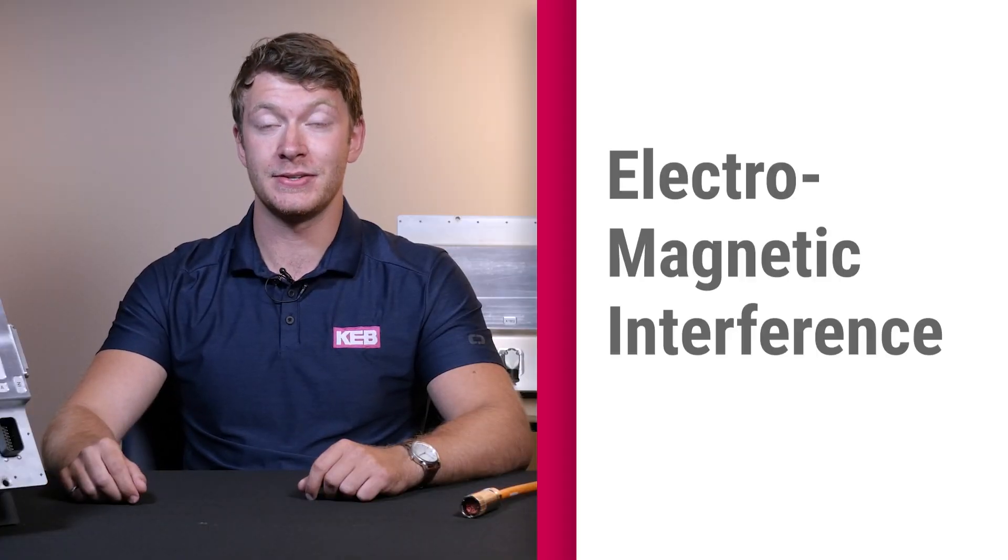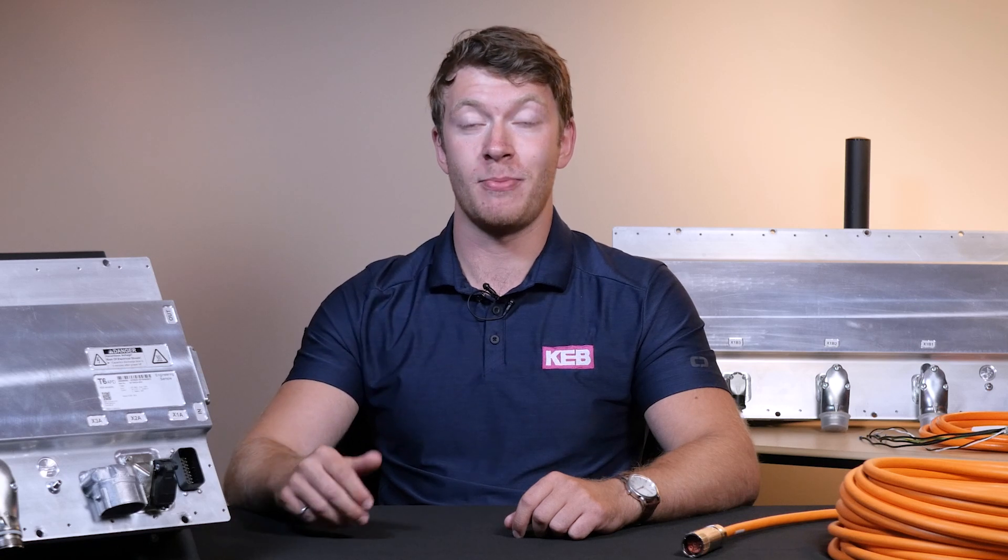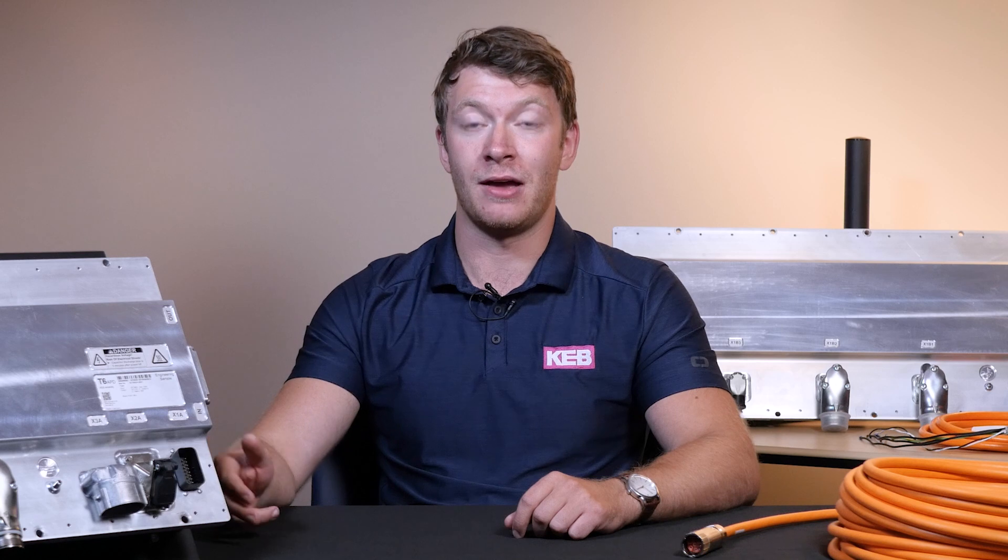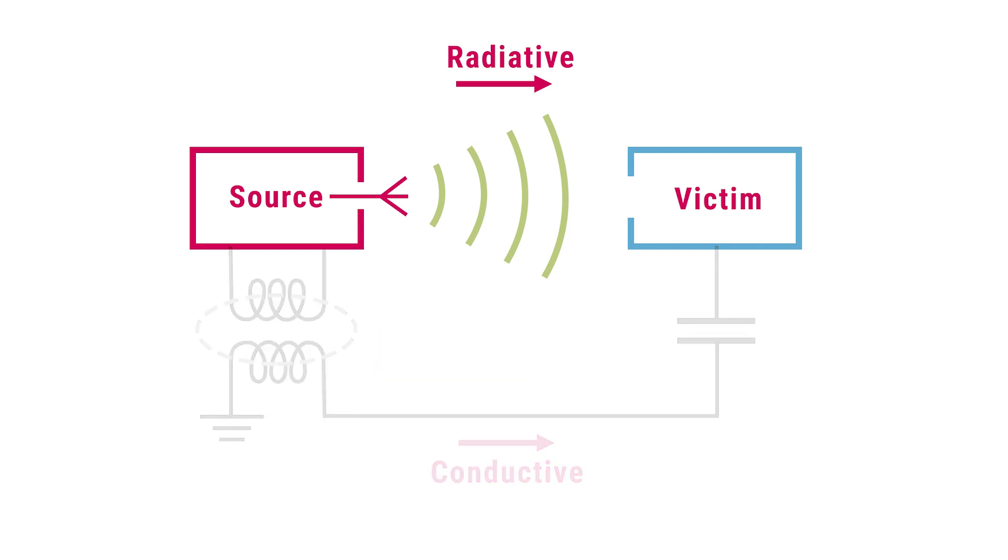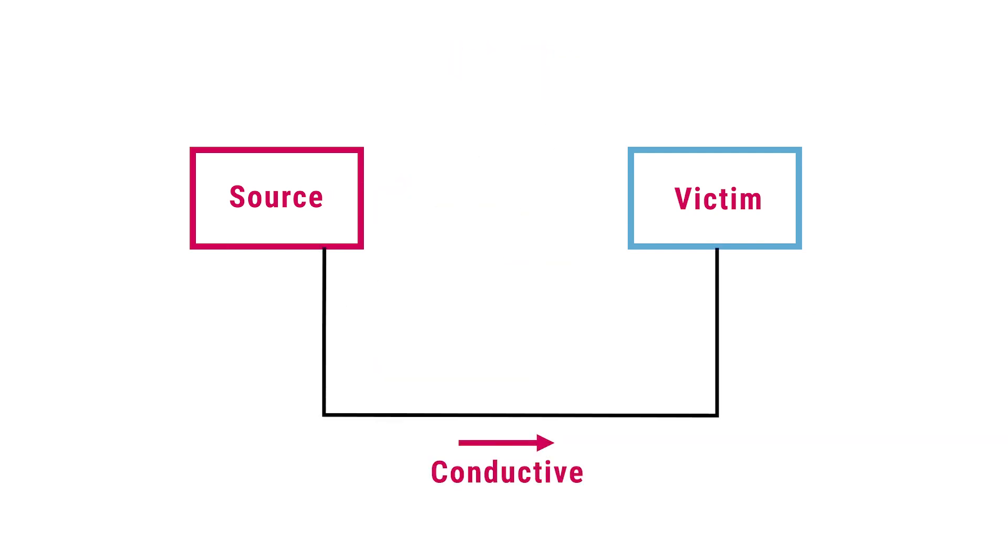EMI stands for electromagnetic interference. This is the noise that shows up on electromagnetic signals. It can cause problems in the intended operation of electronic components. There's different types of interference. You can see different types on this graphic here, but the types we'll be talking about are radiative and conductive emissions.